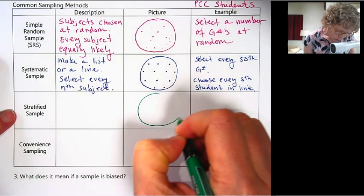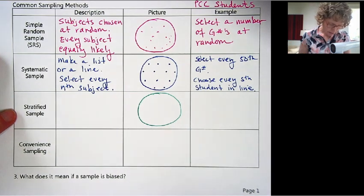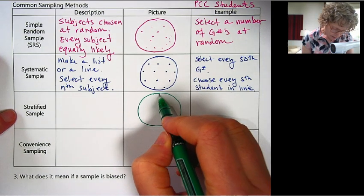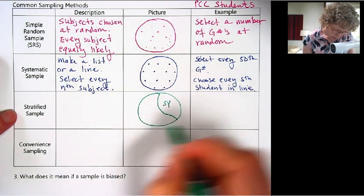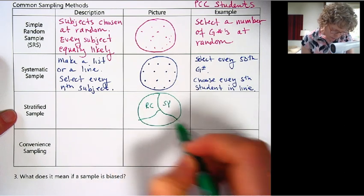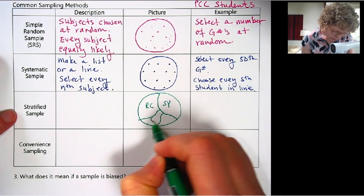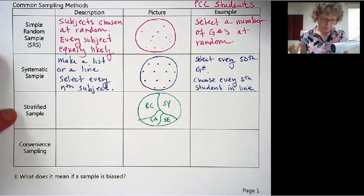This works really well when you have different subgroups in your population. So we have four campuses. Sylvania's pretty big. It's the biggest. Then I think Rock Creek after that. Cascade is a little bigger than Southeast. So we have four different campuses.